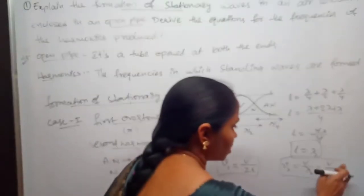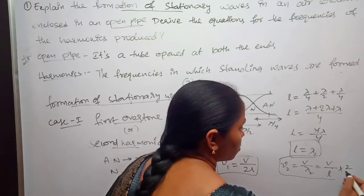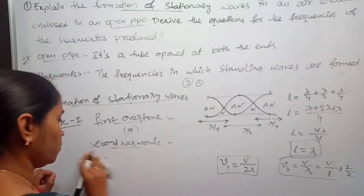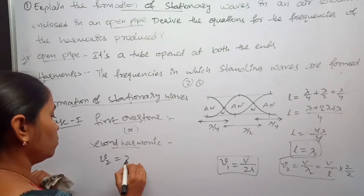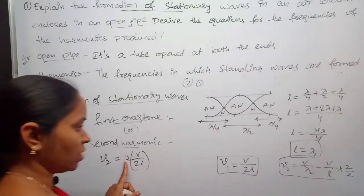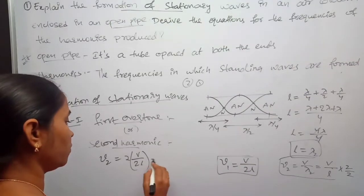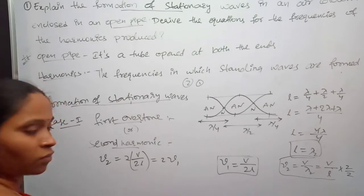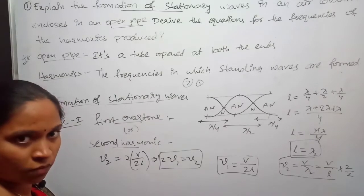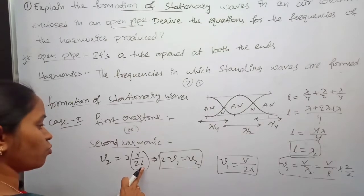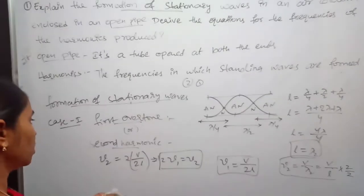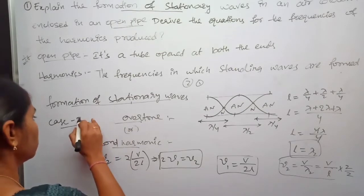Multiplying and dividing by 2, we get ν₂ = 2 × (V/2L) = 2ν₁. Therefore ν₂ = 2ν₁. This is the frequency at which the second harmonic is formed.